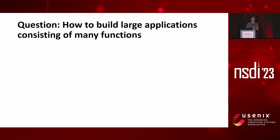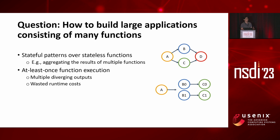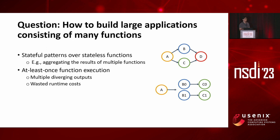In this evolution, an important question for the serverless community is how to build large applications that consist of many functions. Unfortunately, building large applications natively on serverless is challenging. Stateful patterns such as aggregation are difficult to implement because functions disappear after they complete, and provenance must be tracked to aggregate the correct group of functions. Additionally, fast engines typically guarantee at-least-once execution, which complicates both end-to-end correctness and runtime costs. For a single invocation, we can end up with multiple final outputs, and these outputs can also diverge if any one of the functions is non-deterministic.